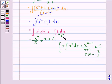1 is the same as x⁰, so n in this case is 0, and we get an x.